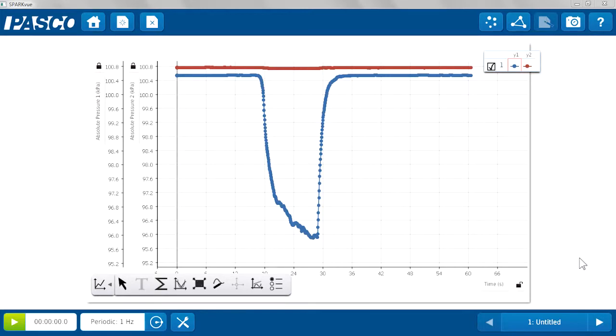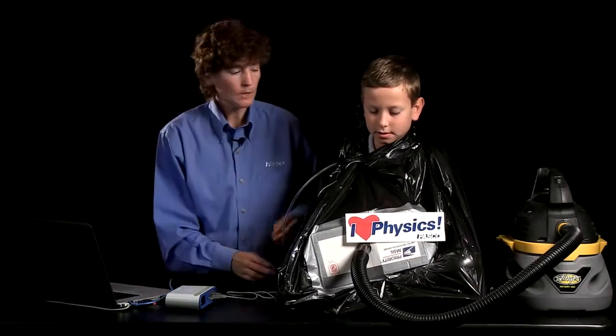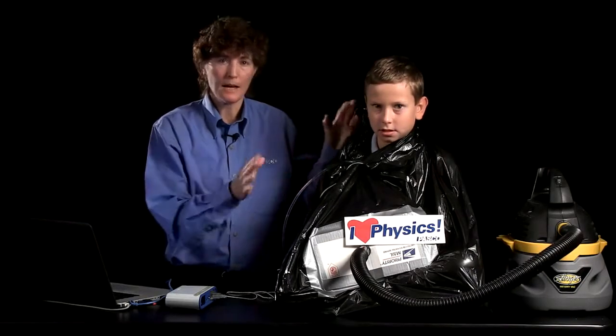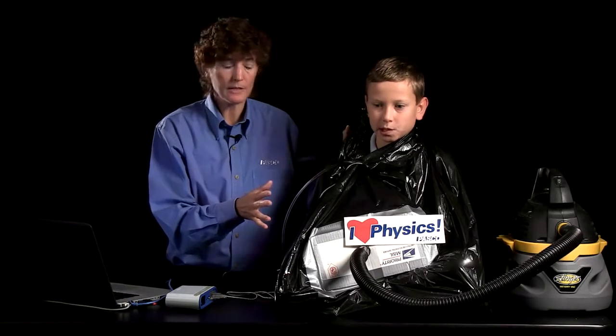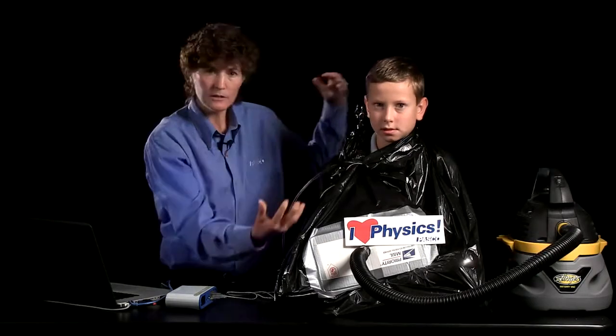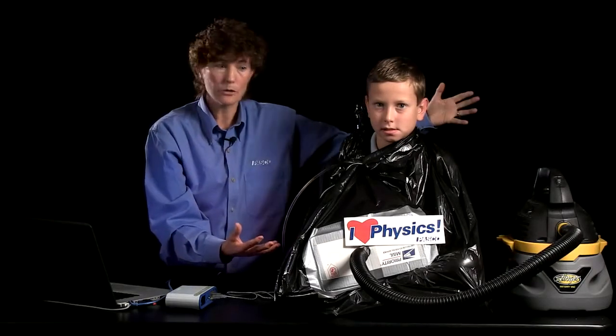So what's going on here? Well, inside the bag, the pressure was lower. Outside the bag, the pressure was greater. As I mentioned before, we're about at sea level, 101,000 pascals pressing down on every square meter, and Joshua's surface area is about a square meter.